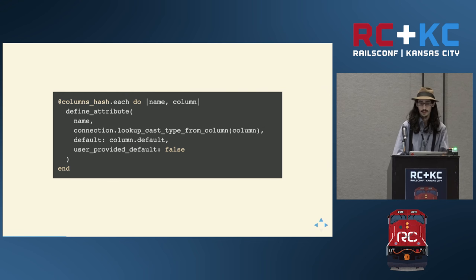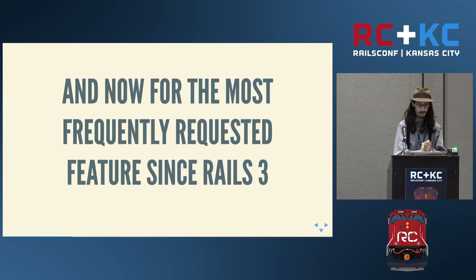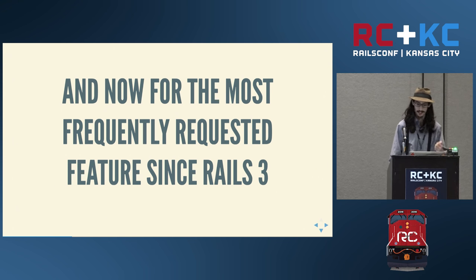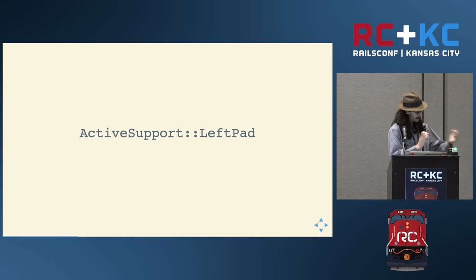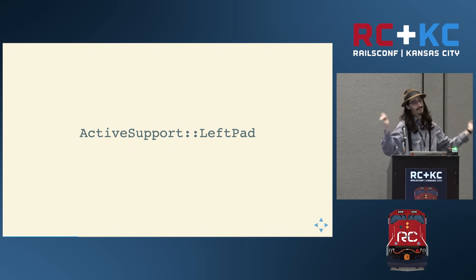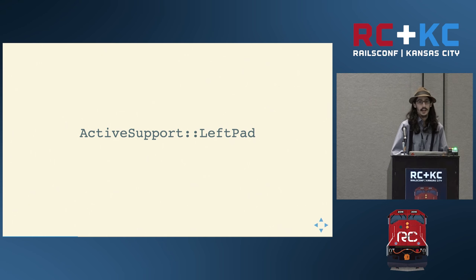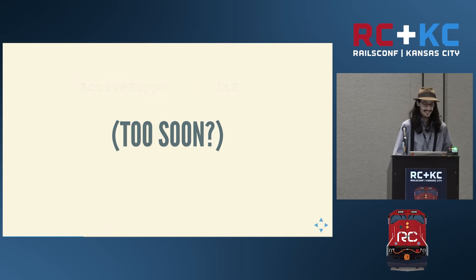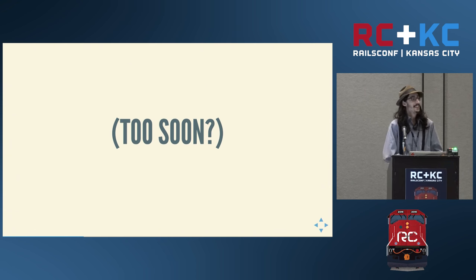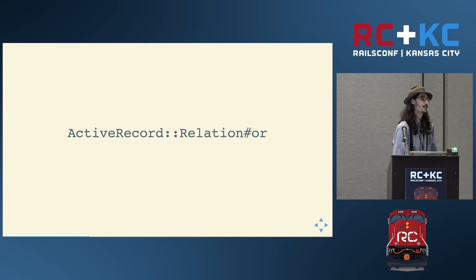I've talked a lot about this in the past and I don't want to spend too much time on it. So let's move on to the single most frequently requested feature since Rails 3 — I'm really excited about ActiveSupport left_pad. Finally, we provide you a way to add padding to the left side of a string, and we feel this feature is so important that we'll be shipping it as a separate gem independently of Rails. But no — this probably actually is the most requested feature: ActiveRecord relation.or. Finally, six years after relation was introduced, you can add an or expression to your where clause.